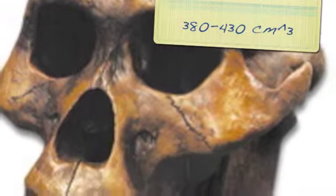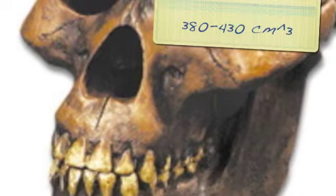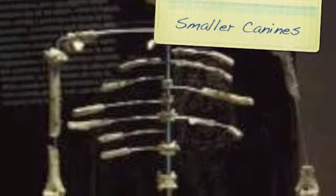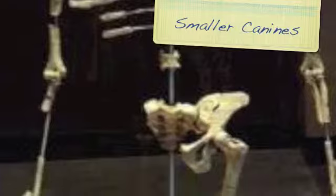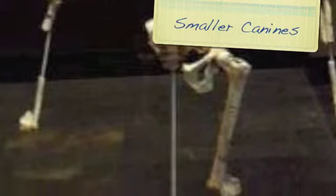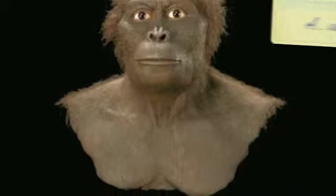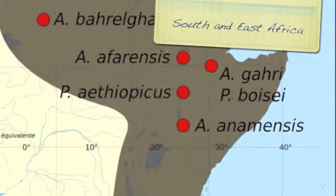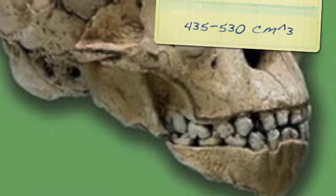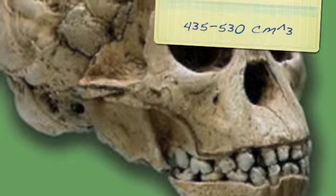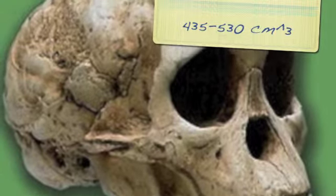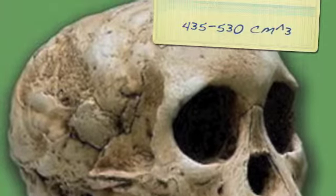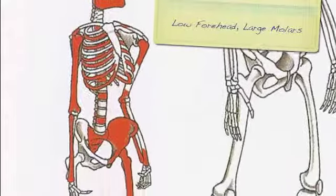The most famous Australopithecus afarensis specimen is Lucy, also the most complete skeleton found, dating to about 3.2 million years ago. Its skull capacity was 380 to 430 cubic centimeters with smaller canines suggesting a more omnivorous diet. Australopithecus africanus lived about 3.2 to 2.5 million years ago in south and east Africa, with a skull capacity of 435 to 530 cubic centimeters, a low forehead, and enlarged molars. It was a small game hunter that moved from trees to the savannah.